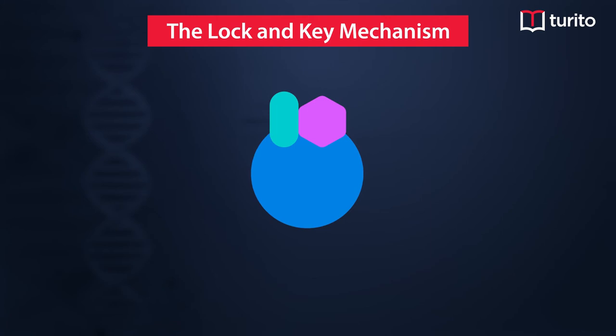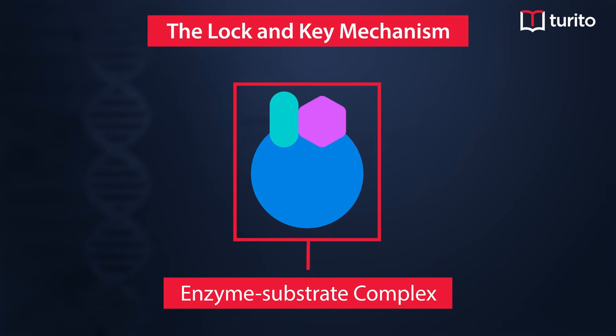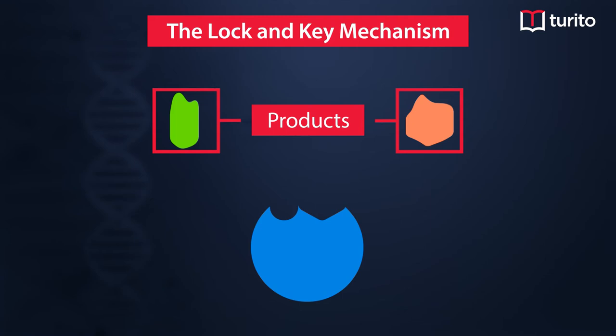The substrate and the enzyme, on combining, form a complex called the enzyme-substrate complex. The substrate undergoes specific chemical changes to form the product. The product does not have similarity with the enzyme active site, so the product is released and the enzyme is unaffected after the reaction.